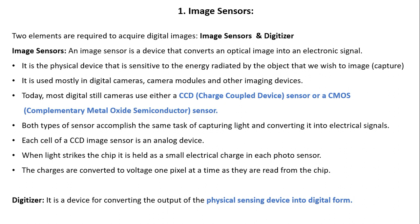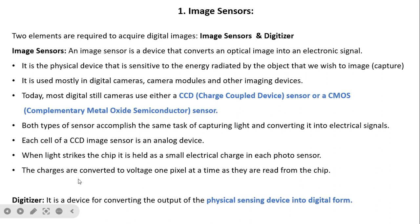Each cell of a CCD image sensor is an analog device. When light strikes the chip, it is held as a small electrical charge in each photo sensor. As the size of the photo sensor is larger, the image quality becomes better. The charges are converted to voltage one pixel at a time as they are read from the chip. This sensor converts optical light into an electrical signal, but since our input must always be in digital format, we require a digitizer.